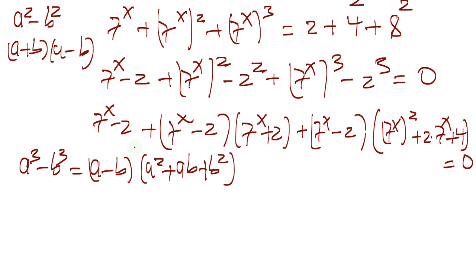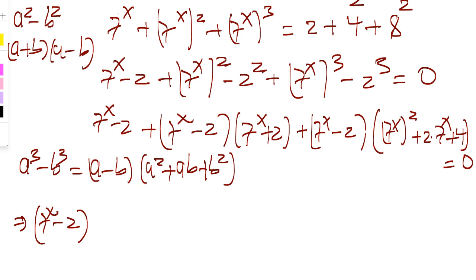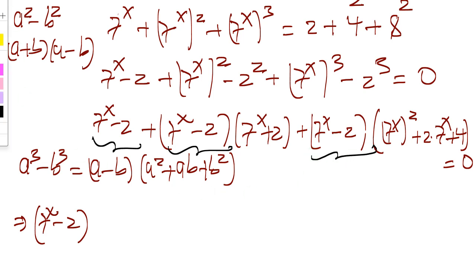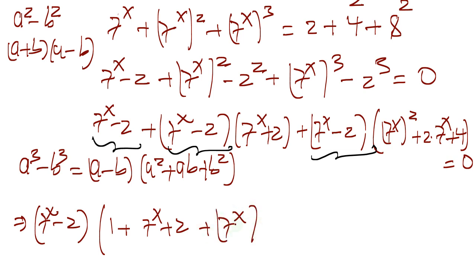Continuing here — let me make more space. We have (7 to the x minus 2), and I'm going to factor out this (7 to the x minus 2) because as you can see it appears here, here, and here. Factoring it out, we get: (7 to the x minus 2) times [1 plus (7 to the x plus 2) plus (7 to the x squared plus 2 times 7 to the x plus 4)] equals 0.